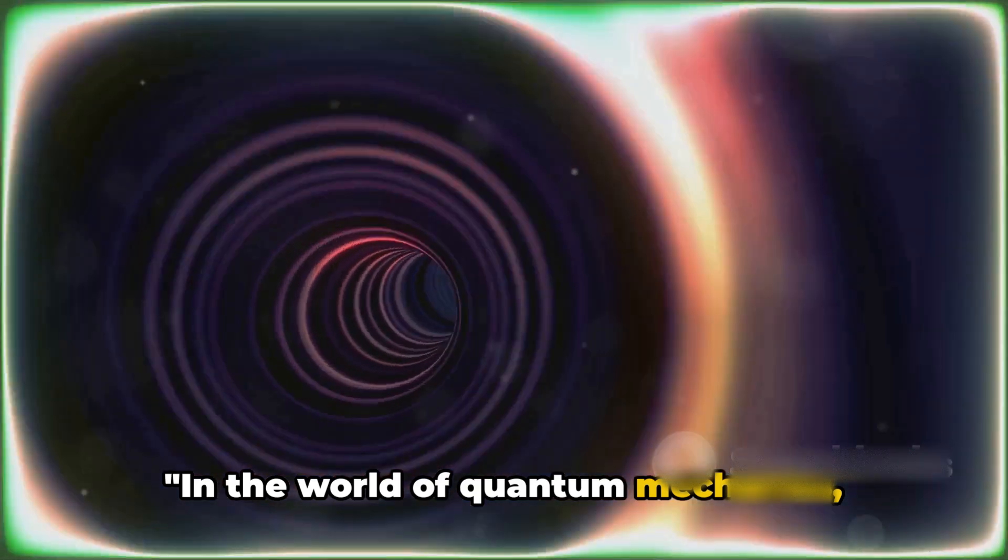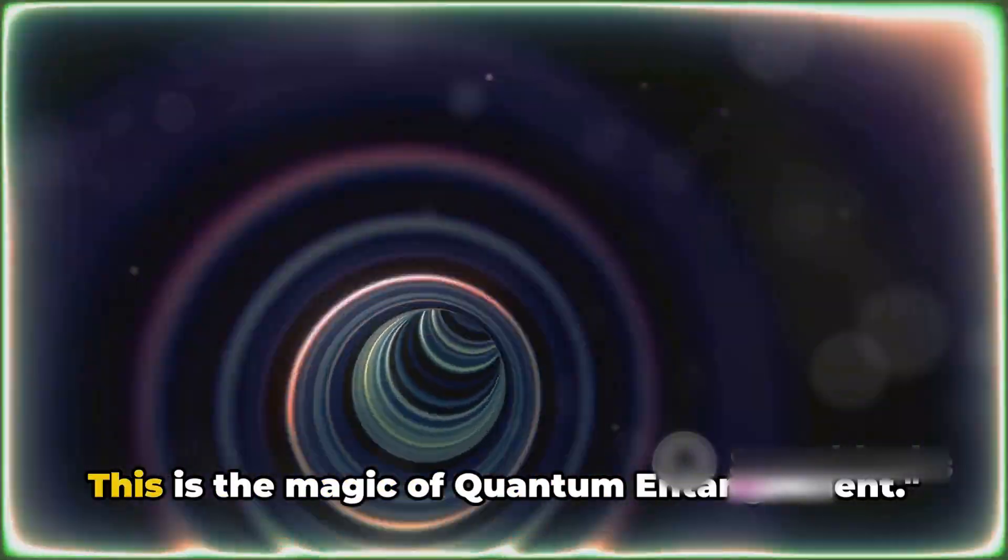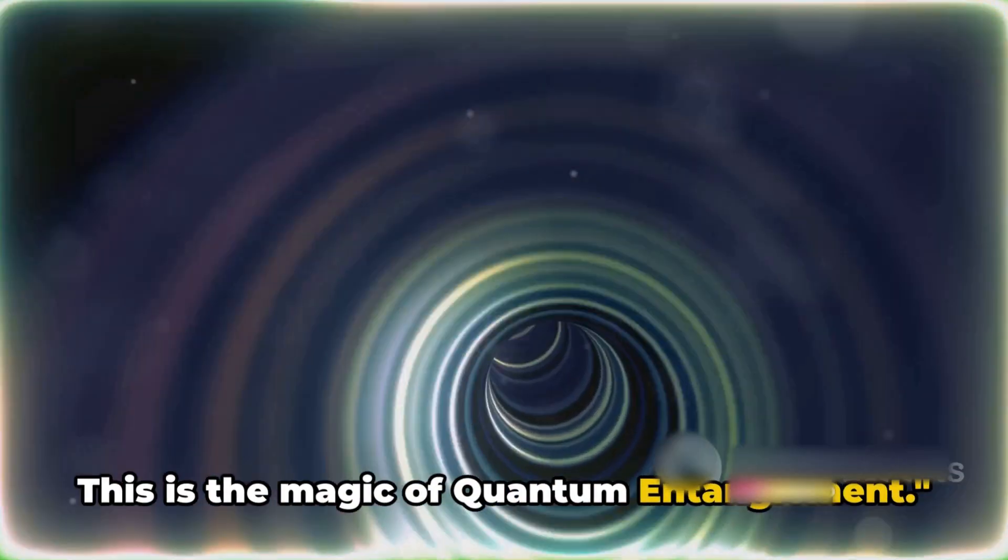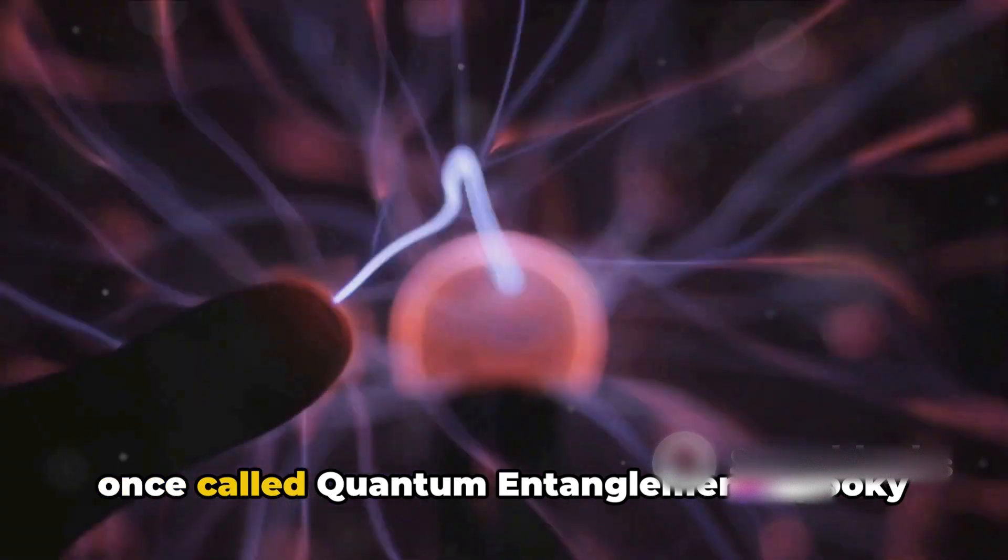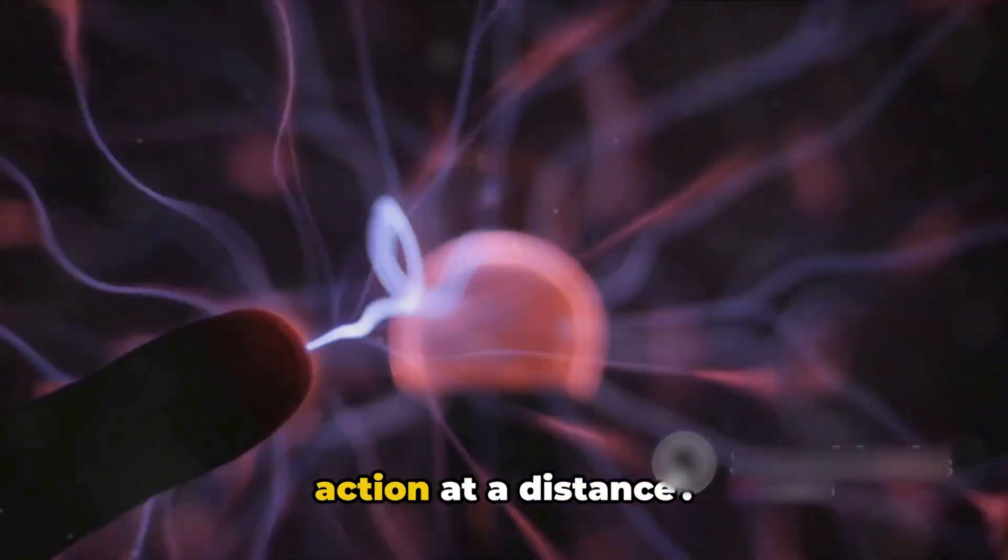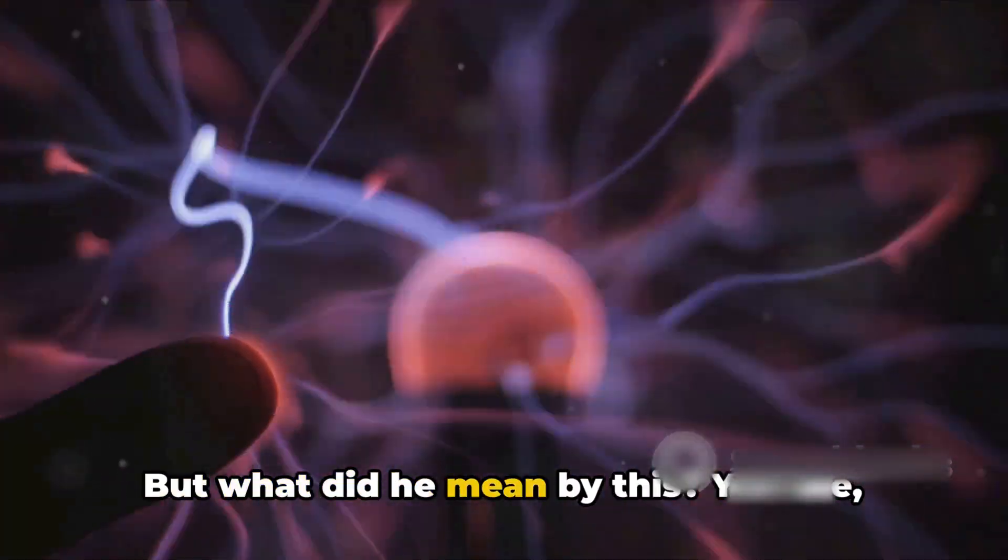In the world of quantum mechanics, distance is just an illusion. This is the magic of quantum entanglement. Einstein, a name synonymous with genius, once called quantum entanglement spooky action at a distance. But what did he mean by this?